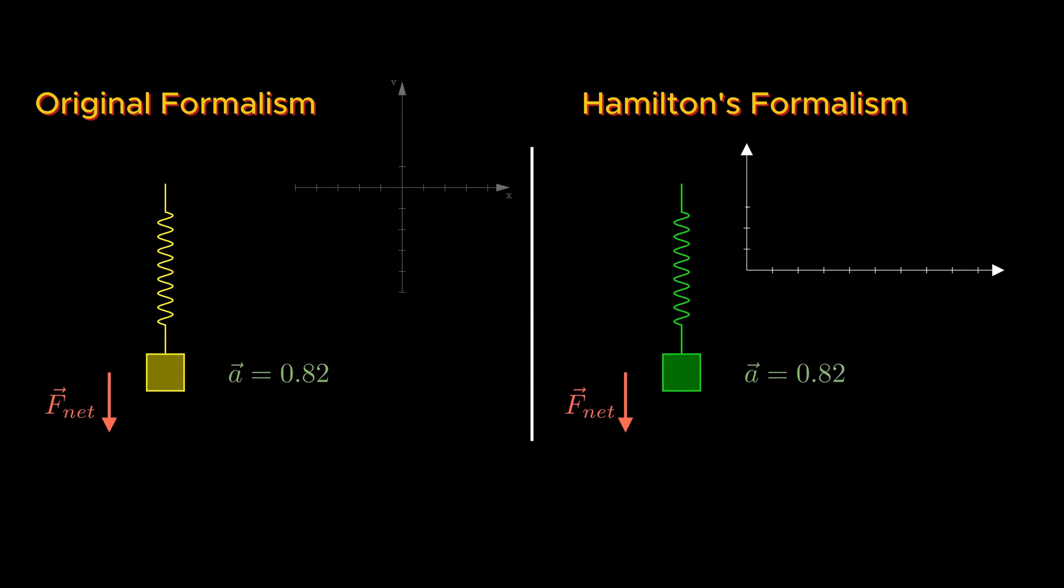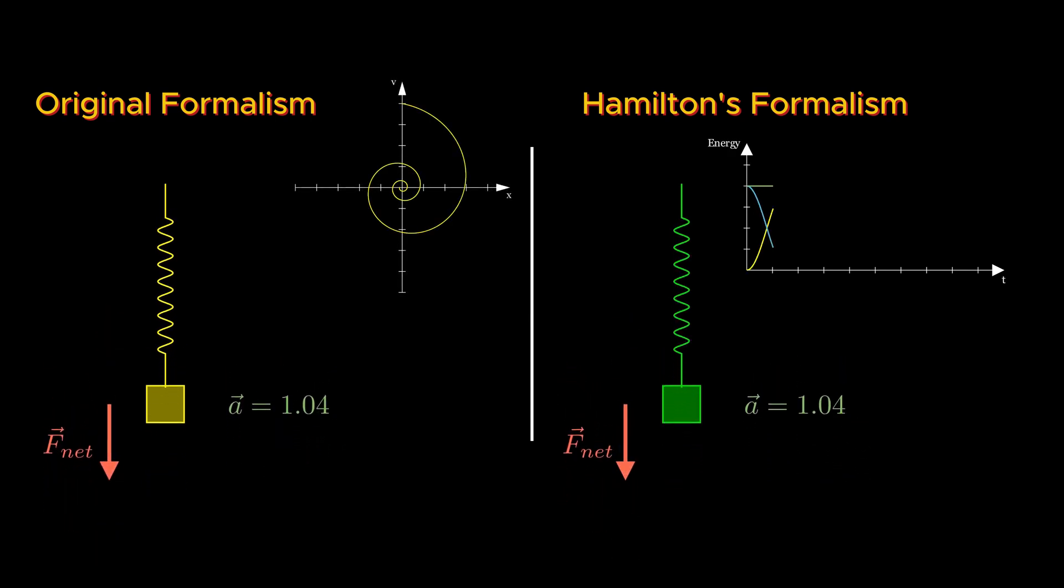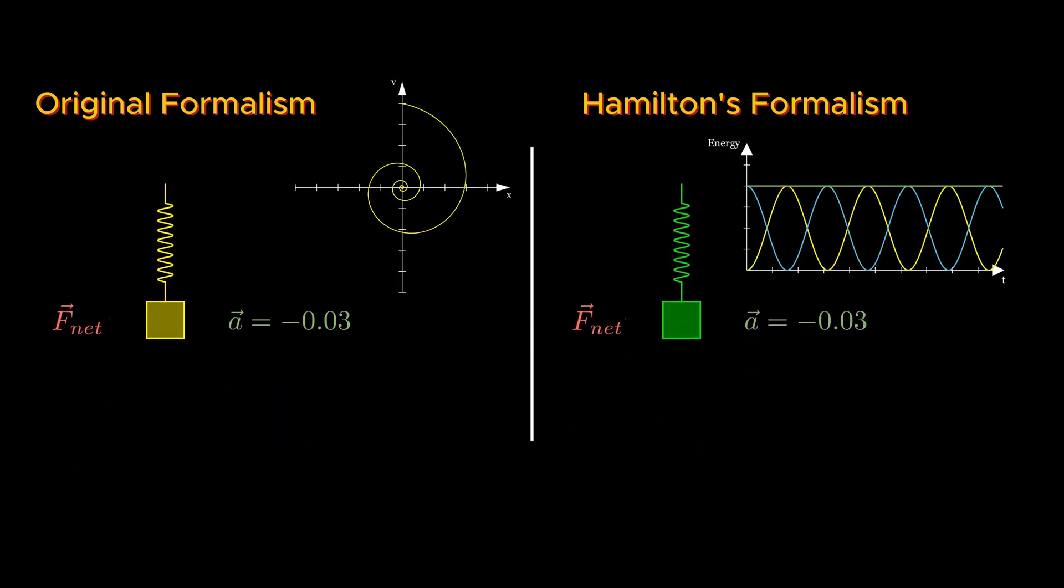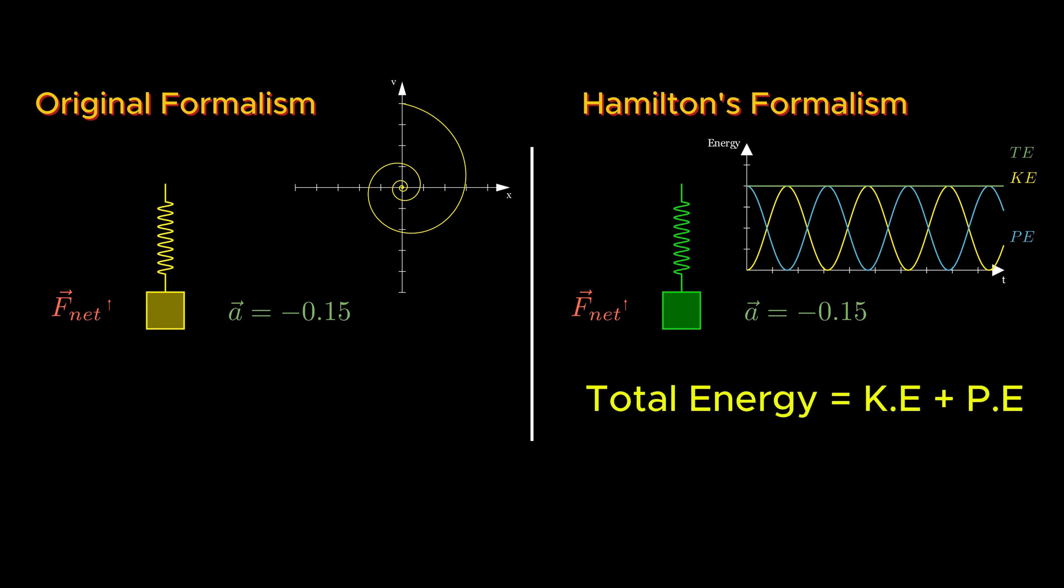Instead of focusing on forces and accelerations as in Newton's original version, they developed equivalent formalisms based on the energy of the system. For example, in Hamiltonian formalism, a system is described in terms of its energy. A formalism like this has a much wider application than just explaining the motions of objects.